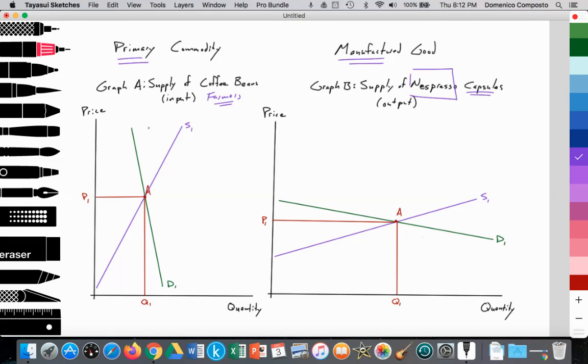Why is Nespresso's demand curve so inelastic? Because there's no substitute for coffee beans. In order for them to produce the Nespresso capsules, they absolutely need the coffee beans. So their demand curve is very inelastic.